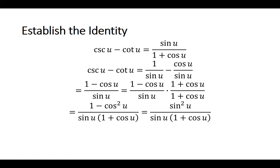Now I should see that 1 minus cosine squared u is part of a Pythagorean identity — that's equal to sine squared u, since sine squared u plus cosine squared u equals 1. So I substitute sine squared u in my numerator. Now I have sine squared u over sine u times 1 plus cosine u. There's a common factor of sine u in the numerator and denominator, so dividing that out, I'm left with sine u on top and 1 plus cosine u on the bottom. I have established the identity that cosecant u minus cotangent u equals sine u over 1 plus cosine u.